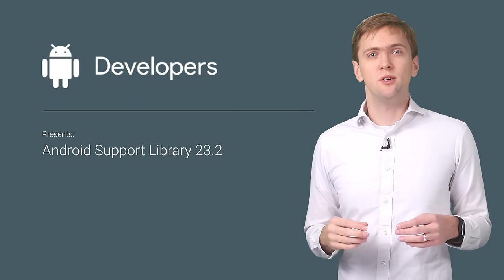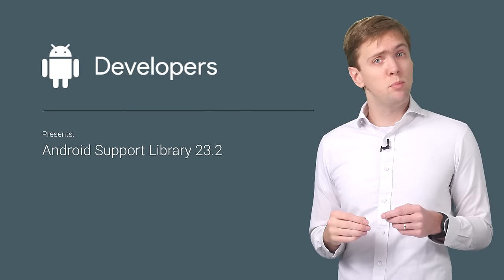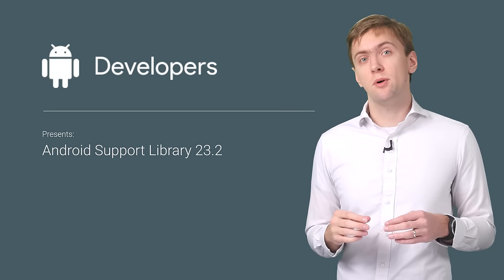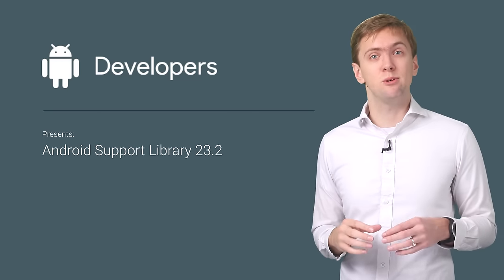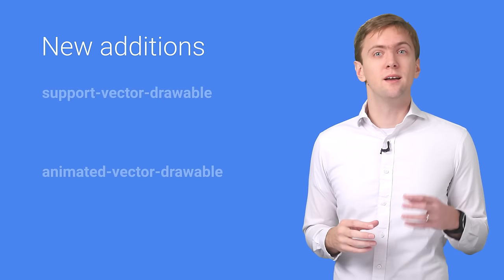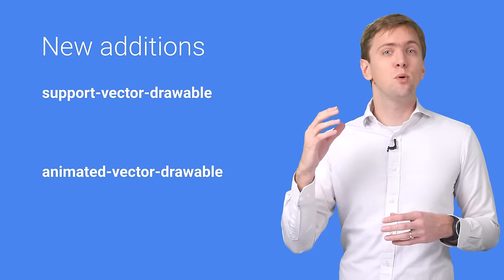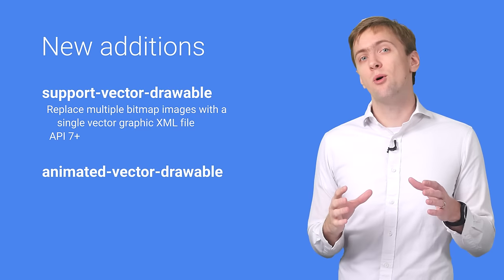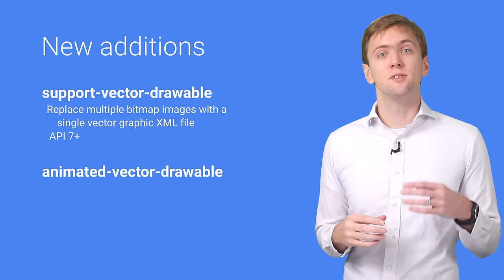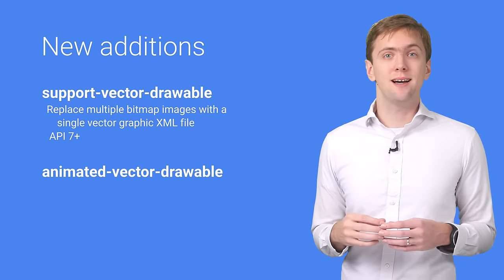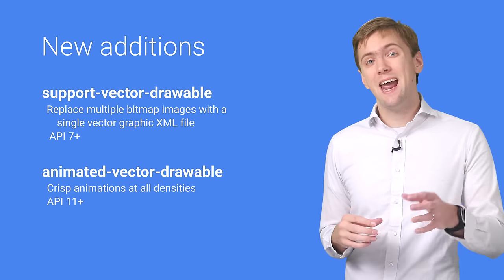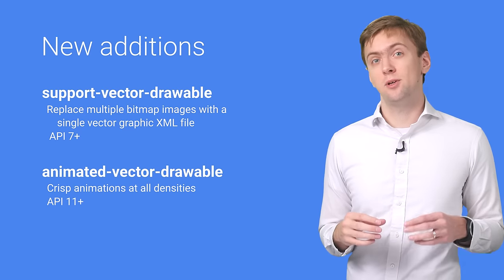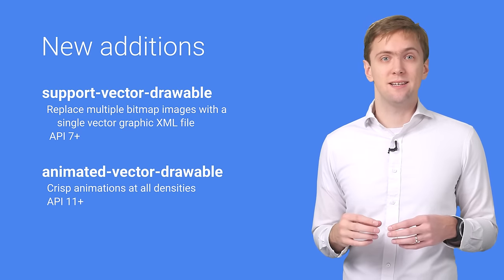If you're looking for totally new features or important improvements, version 23.2 of the Android Support Library doesn't disappoint. There are two new additions to the Support Library family: Support Vector Drawable and Support Animated Vector Drawable. These bring the power and flexibility of Vector Drawables to all API 7 and higher devices, and Animated Vector Drawables to all API 11 and higher devices.